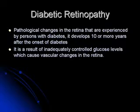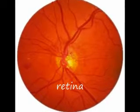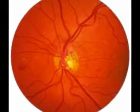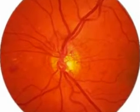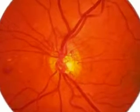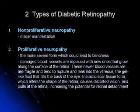Diabetic retinopathy involves pathological changes in the retina experienced by persons with diabetes. It usually develops 10 or more years after the onset of diabetes, and results from inadequately controlled glucose levels which cause vascular changes in the retina. There are two types: non-proliferative retinopathy, which has milder manifestations, and proliferative retinopathy, the more severe form which could lead to blindness.